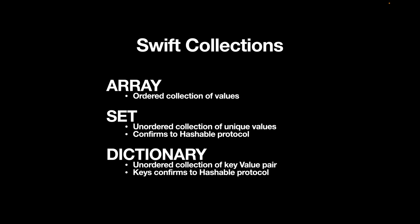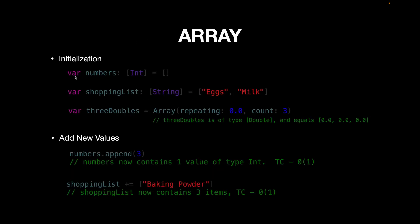Let's look at each of these in more detail. This is how we initialize Arrays. Let's say you have to create an array of numbers — you can create it with var numbers. You can also initialize it with some default values, like a shopping list array initialized with eggs and milk. And you can initialize it with repeating default values: using Array(repeating: 0.0, count: 3) gives us an array with three 0.0 numbers.